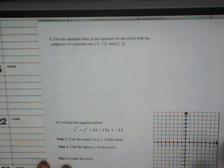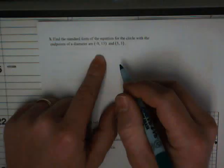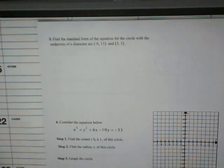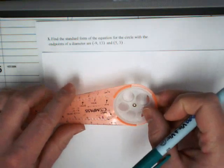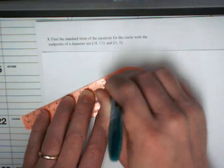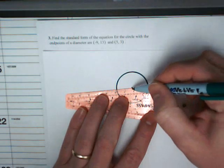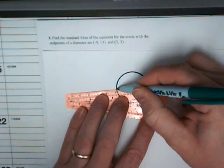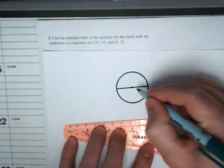Find the standard form of the equation of the circle with endpoints of the diameter negative 9, 13, and 5, 3. So, what you have is the diameter of a circle. Let's just draw this quick circle here. So there's the center of the circle, and you've got the circle, and then you draw a line. A line that goes through the center is the diameter.